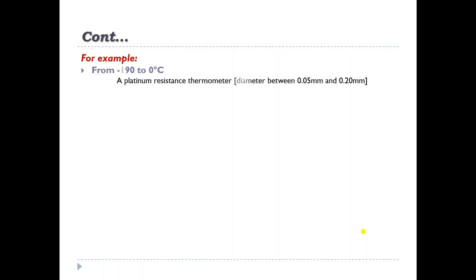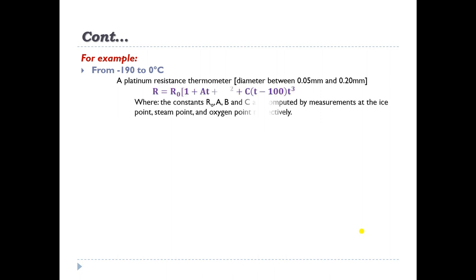From −190°C to 0°C, a platinum resistance thermometer with platinum wire of diameter between 0.05 mm and 0.20 mm is used. The temperature is defined by a polynomial of the form R = R₀(1 + AT + BT² + C(T − 100)T³), where the constants R₀, A, B, and C are computed from measurements at the ice point, steam point, and oxygen point respectively.